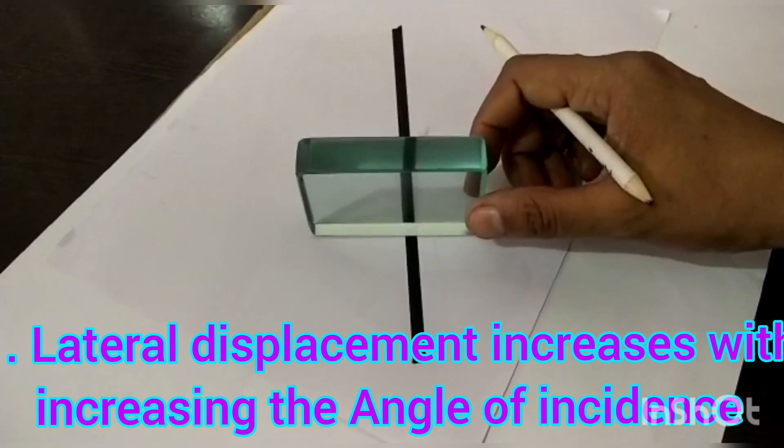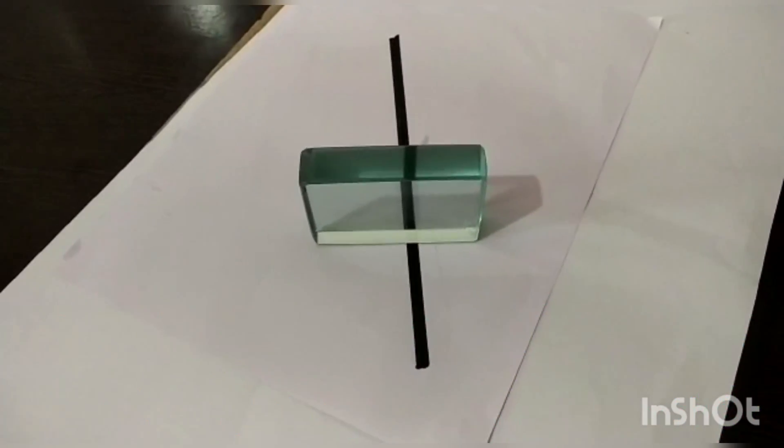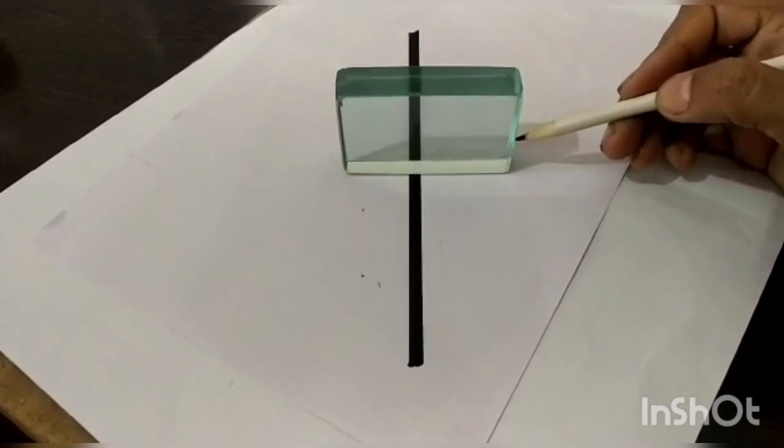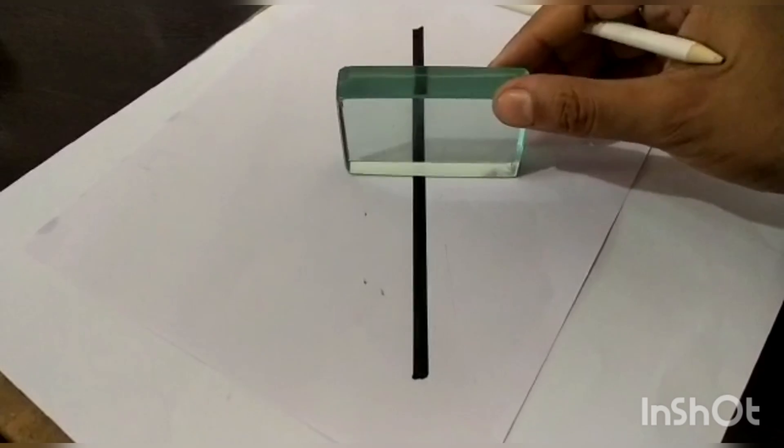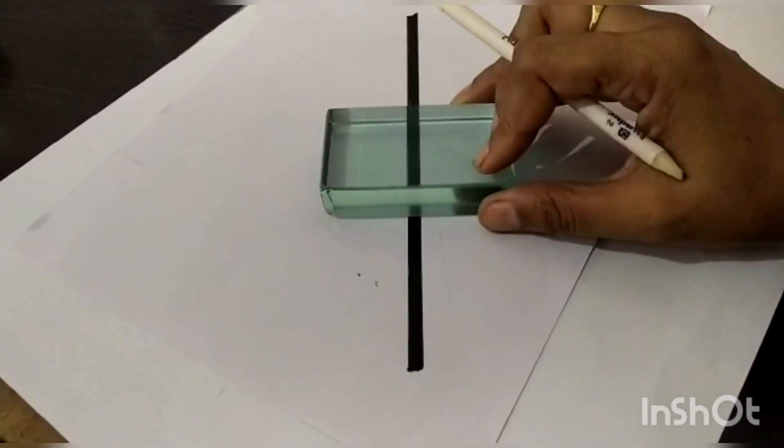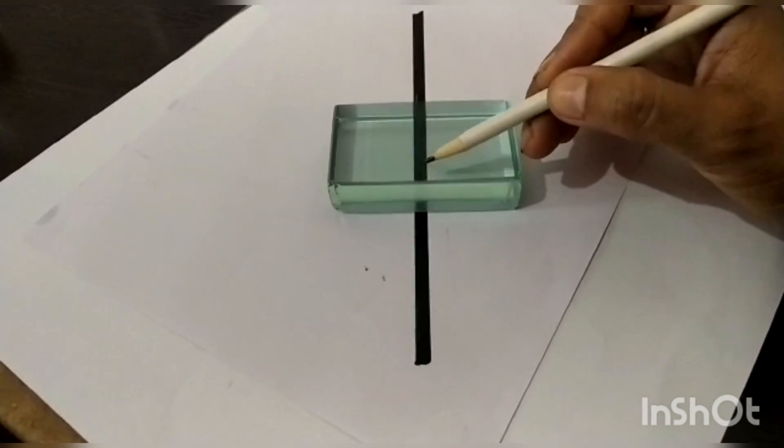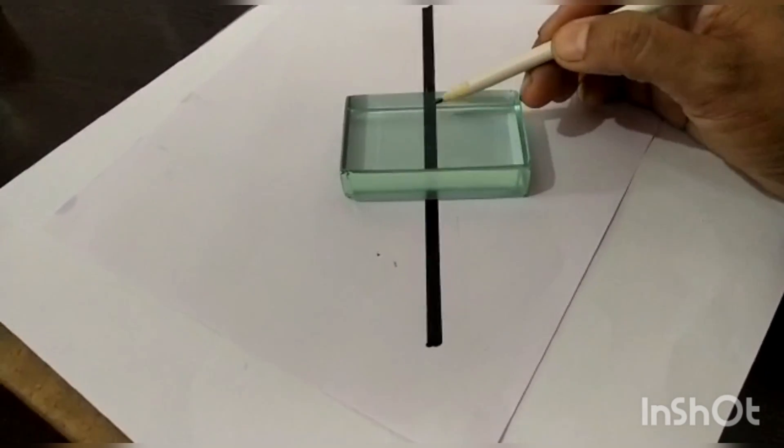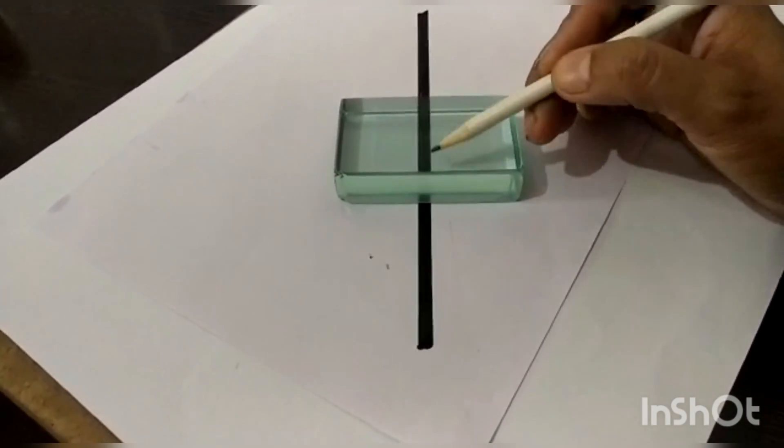In this case, I have placed the glass slab in vertical position and the light ray is passing only through this portion. But when I placed it on this side, the light ray has to travel comparatively a longer path. So the light ray is traveling more distance through the glass, and that's why lateral shift B should be more.